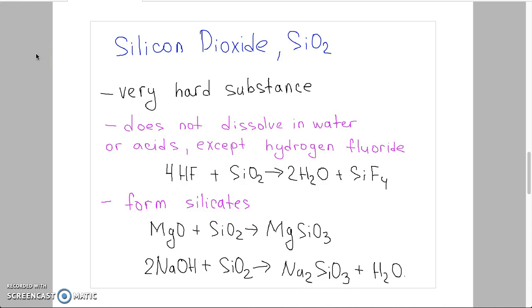Silicon dioxide is the only stable oxide of silicon. It's a very hard substance. It doesn't dissolve in water or acids except hydrogen fluoride. Here we can see the reaction between hydrogen fluoride and silicon dioxide. In the product we have water and silicon tetrafluoride (SiF4).